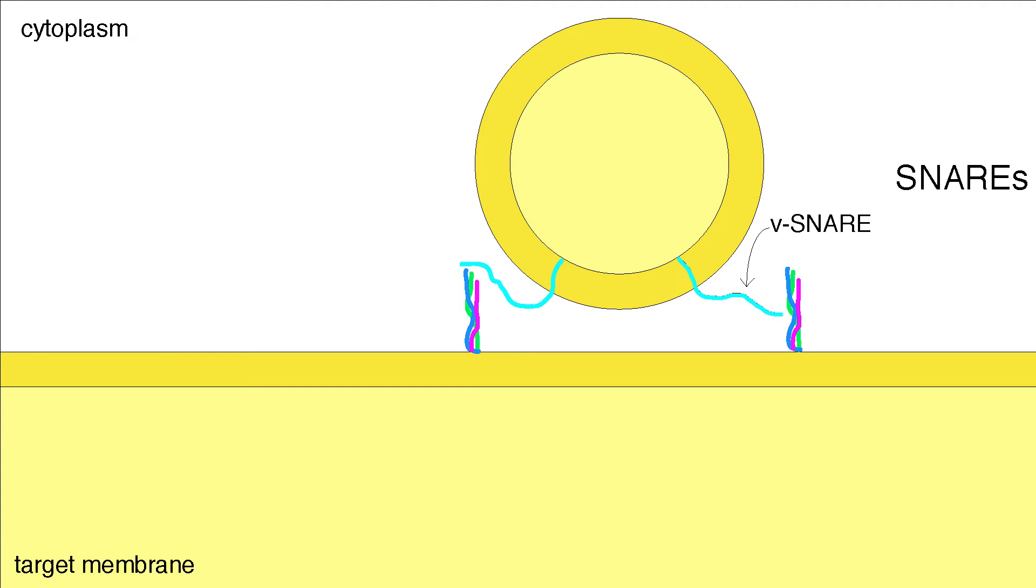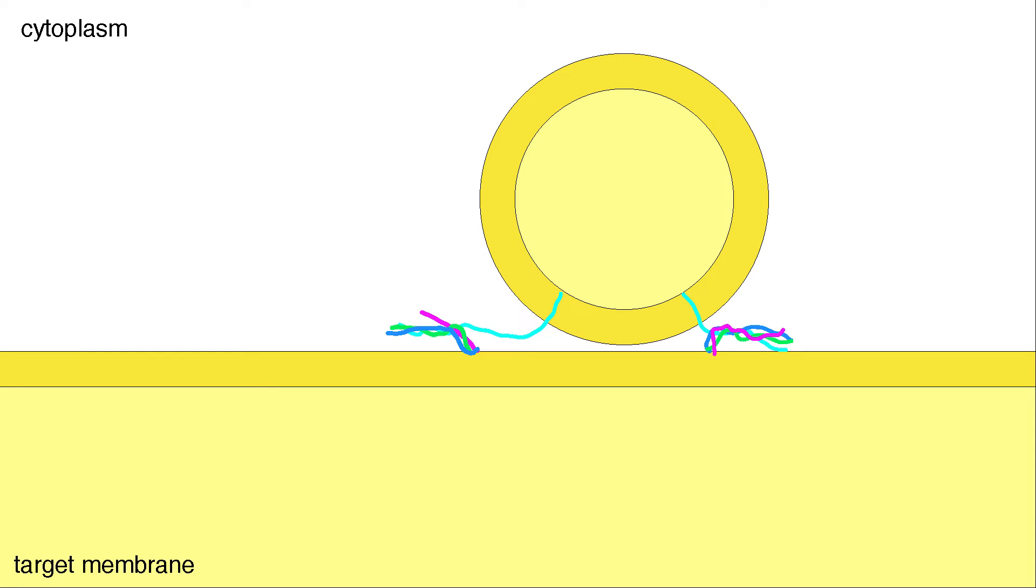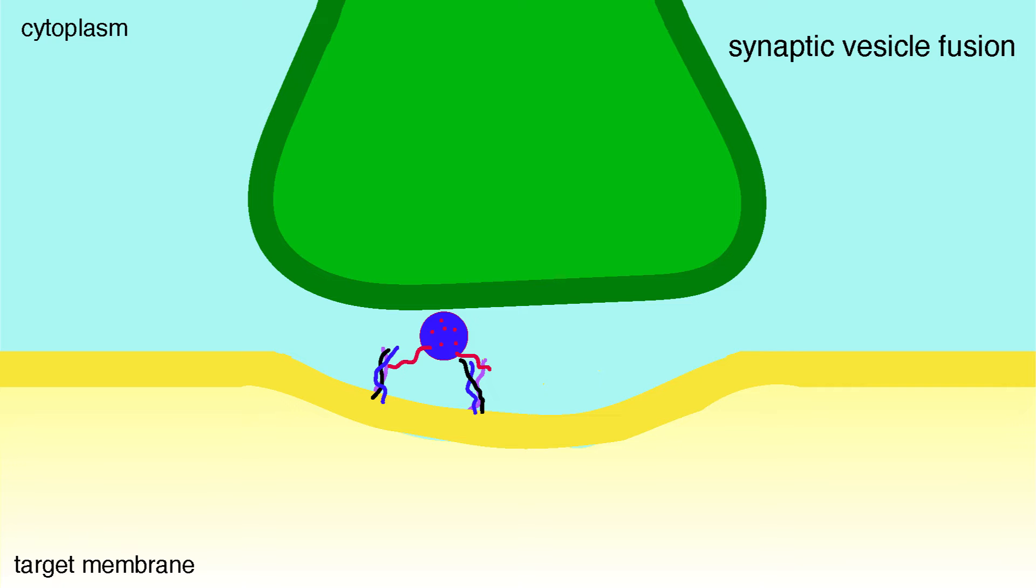Once the vesicle is docked, a V-snare anchored to the vesicular membrane and two T-snares anchored to the target membrane coil together. For example, in synaptic vesicle fusion, neuronal vesicles are fused with the plasma membrane to deliver neurotransmitters to a neighboring cell. During neuronal vesicle fusion, the T-snare protein SNAP25 forms coiled coils with another T-snare called synaptobrevin and the V-snare syntaxin.